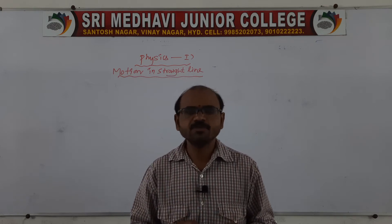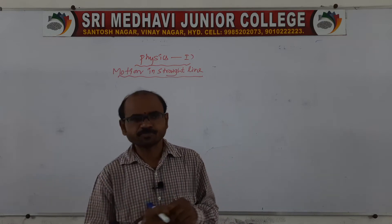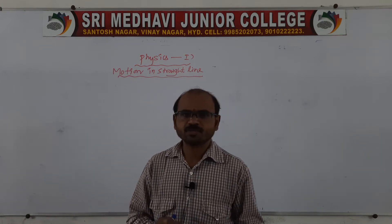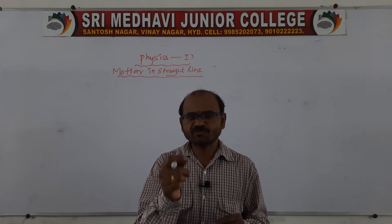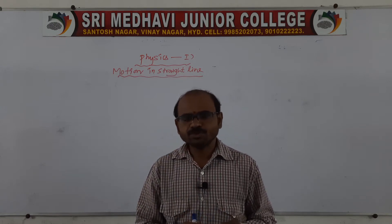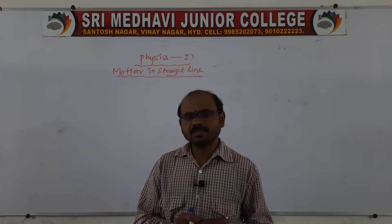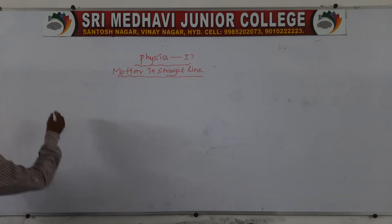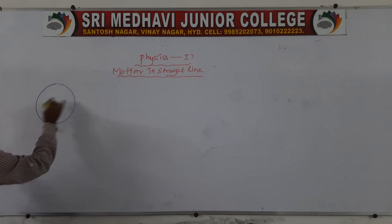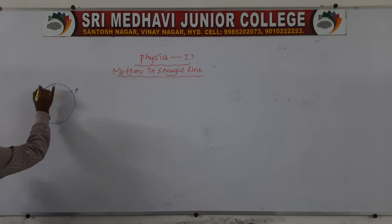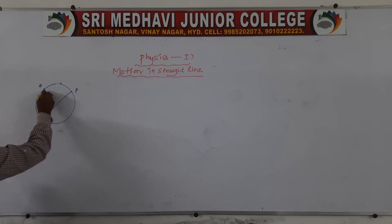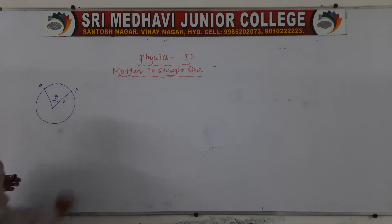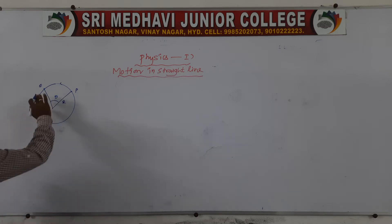I will give you another example related to distance and displacement. Suppose a particle is moving from point P to Q along an arc of a circle, subtending an angle theta at the center. The arc length from P to Q is the distance covered, and the radius of the circle is R.